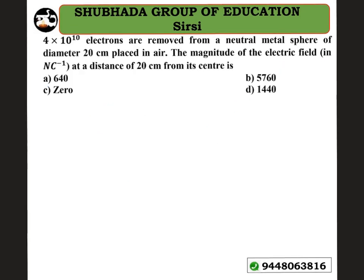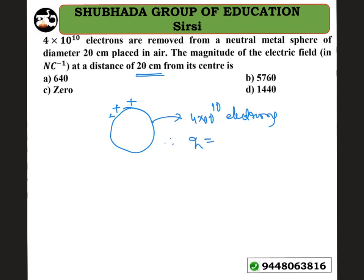Look at the next problem: 4 × 10¹⁰ electrons are removed from a neutral metal sphere of diameter 20 cm placed in air. The magnitude of the electric field at a distance of 20 cm from the center is? Since electrons are removed, the body becomes positively charged.